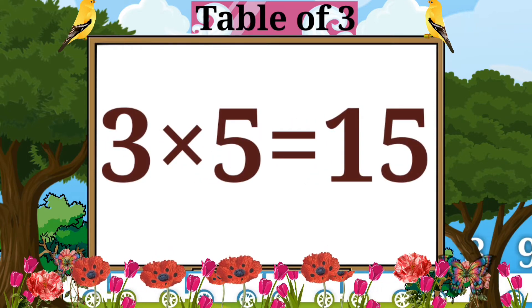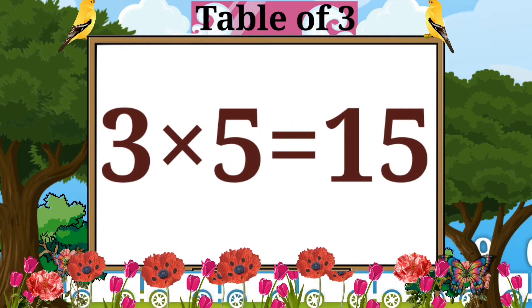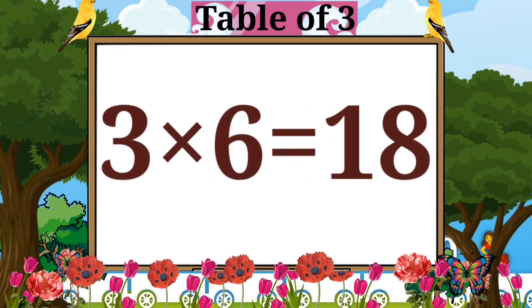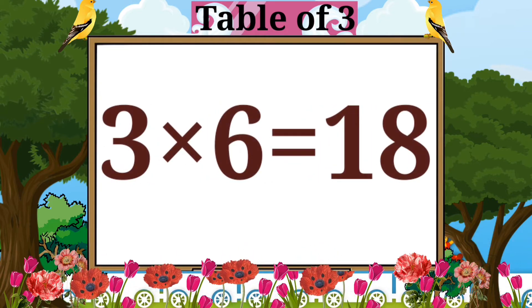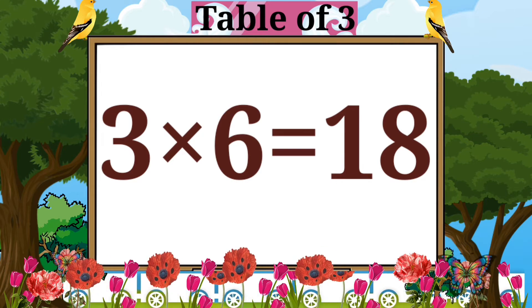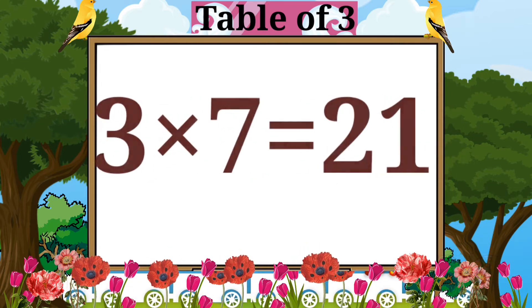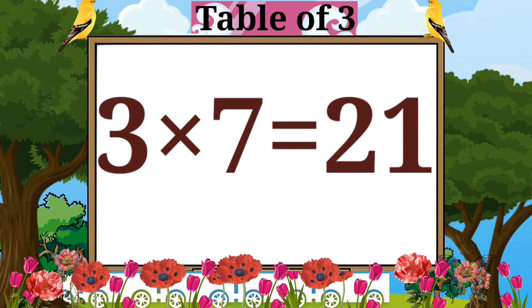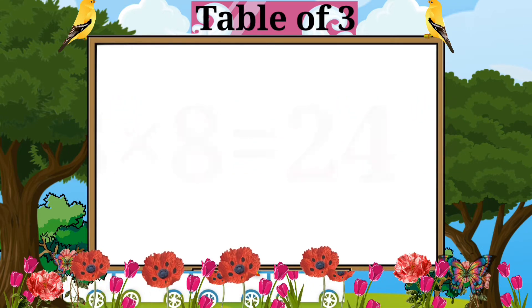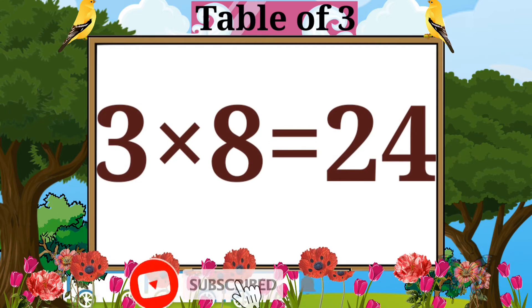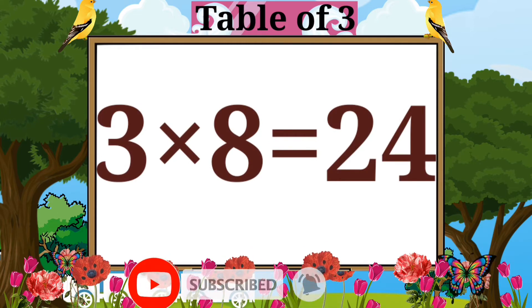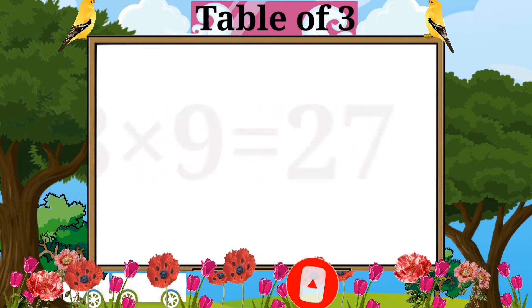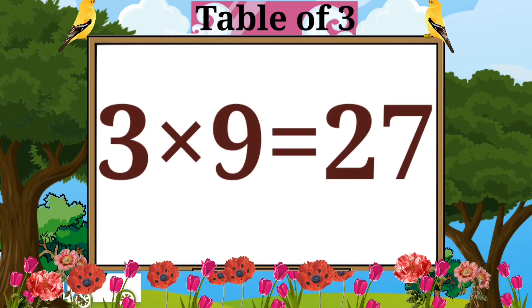Three fives are fifteen. Three sixes are eighteen. Three sevens are twenty-one. Three eights are twenty-four. Three nines are twenty-seven.